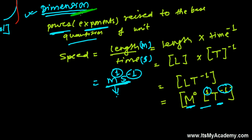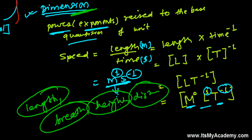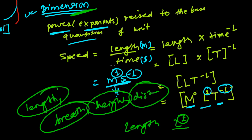One important thing to keep in mind when discussing dimensions: we do not consider magnitude. Dimension is solely about quality. Whether you say length, breadth, height, distance, or displacement — all of these have the same dimension, which is length to the power one. We focus on quality rather than quantity, so magnitude is not considered in dimensional analysis.